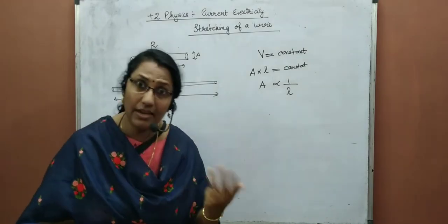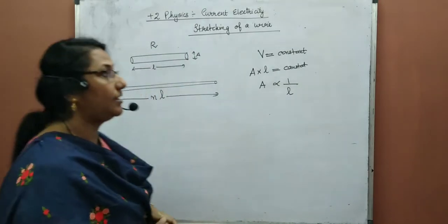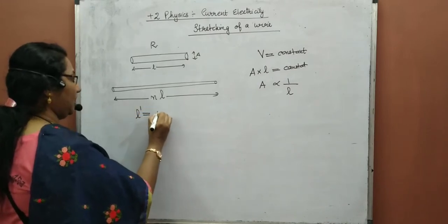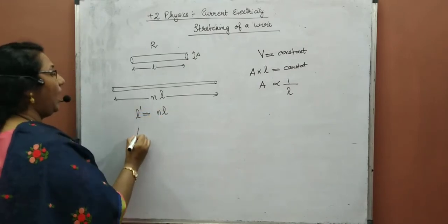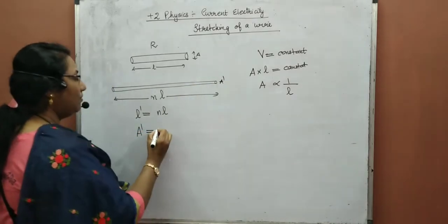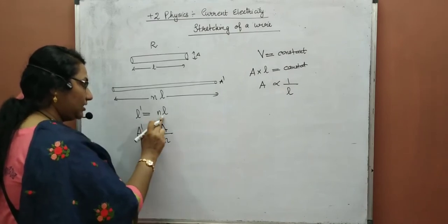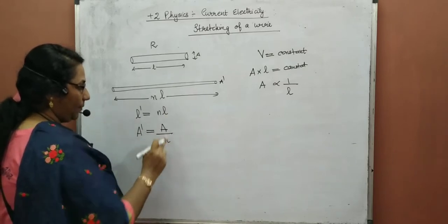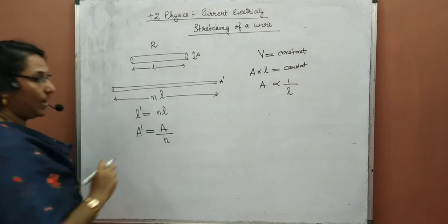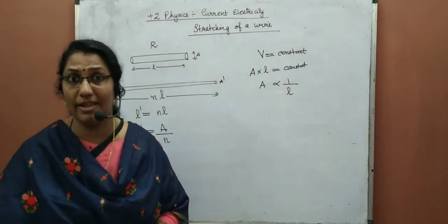The initial resistance was R equals ρL/A. The new resistance R' equals ρ·L'/A'. Resistivity ρ never depends upon length or area of cross section — it is the proportionality constant. So ρ remains unchanged. Substituting: R' equals ρ times (N·L) divided by (A/N). What is L'? N times L. What is A'? A/N.